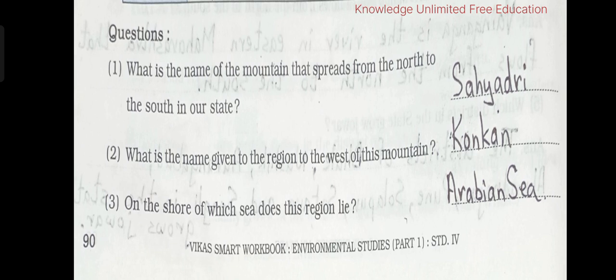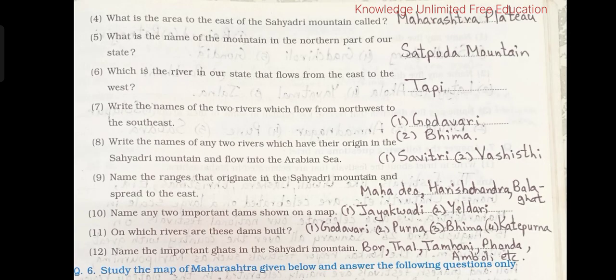3. On the shore of which sea does this region lie? Arabian Sea. 4. What is the area to the east of the Sahyadri mountain called? Maharashtra Plateau. 5. What is the name of the mountain in the northern part of the state? Satpura mountain.